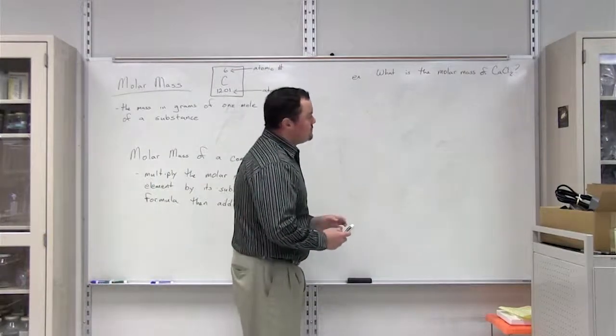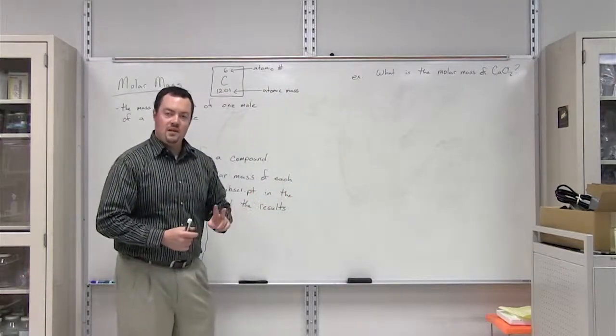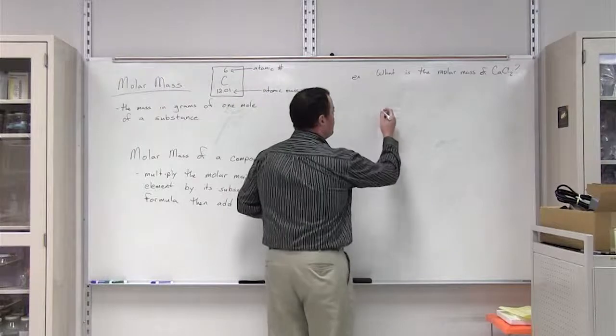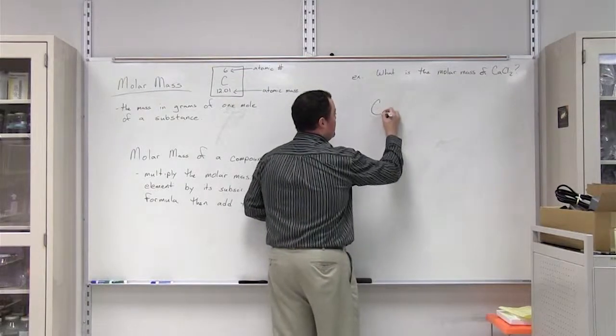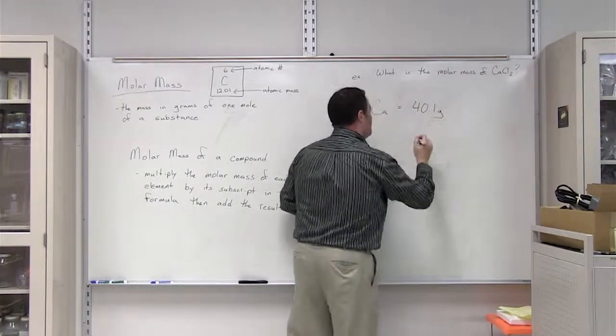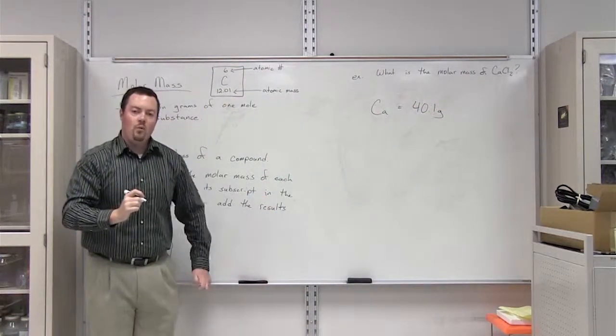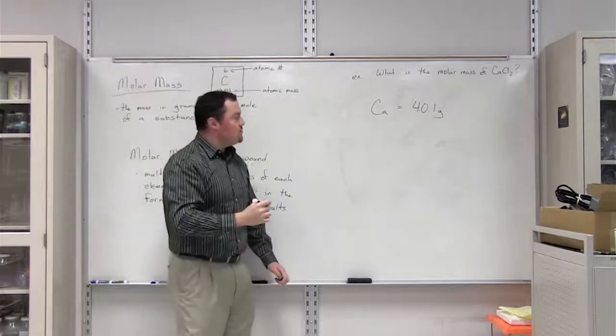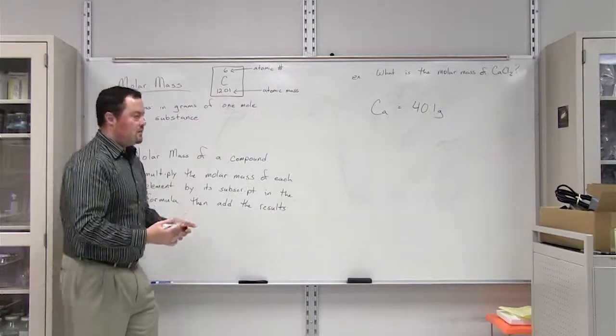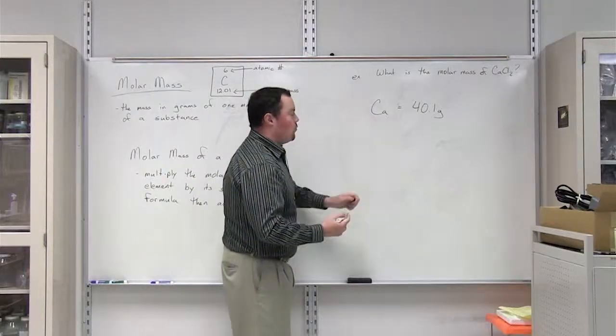Calcium chloride contains two different elements: calcium and chlorine. The molar mass of calcium is equal to 40.1 grams. This comes directly from the periodic table, and the atomic mass under calcium is 40.1.